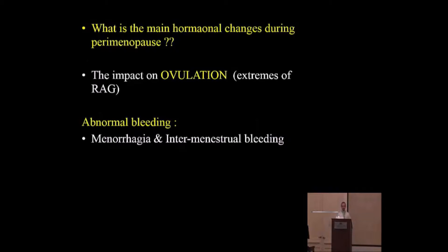The main hormonal changes during the perimenopausal age are the underlying cause. During the extremes of the reproductive age group there are anovulatory cycles. Normally, ovulation leads to corpus luteum formation and progesterone secretion. During anovulatory cycles — both early menarche and premenopause — there is no ovulation, so we lack corpus luteum, resulting in sustained persistent estrogen stimulation. This causes thickening of the endometrial stripe, followed by irregular shedding, which is why we see it commonly at early menarche and in premenopausal patients.